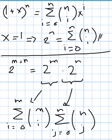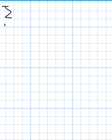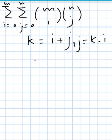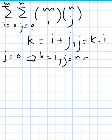Writing the full double summation: i from 0 to m and j from 0 to n of m-choose-i times n-choose-j. Now let's make a change of variable: let k equal i plus j. Then j equals k minus i. When j equals 0, k equals i; when j equals n, k equals i plus n.